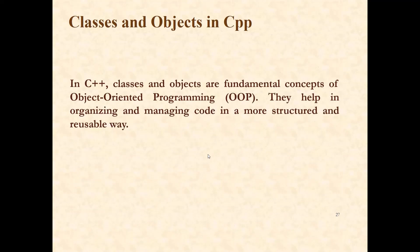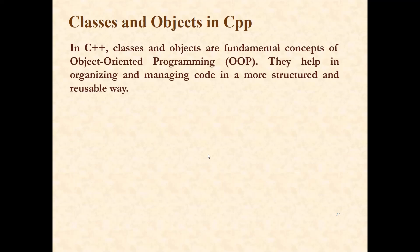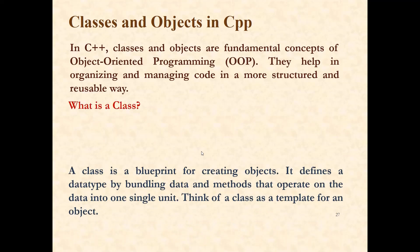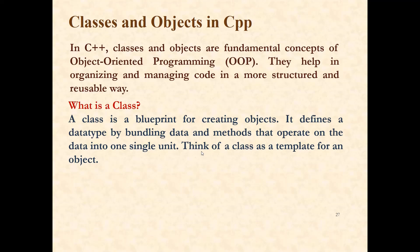So what are classes and objects in C++? Classes and objects are a very important part in C++. Classes and objects are fundamental concepts of object-oriented programming. They help in organizing and managing the code in a more structured and reusable way. In fact, object-oriented programming could be possible just because of classes and objects in C++. So what is a class? A class is a blueprint for creating objects. It defines a data type by bundling data and methods that operate on the data into one single unit. It is just like a framework, just like a template, and because of that framework and template, object creation is possible.